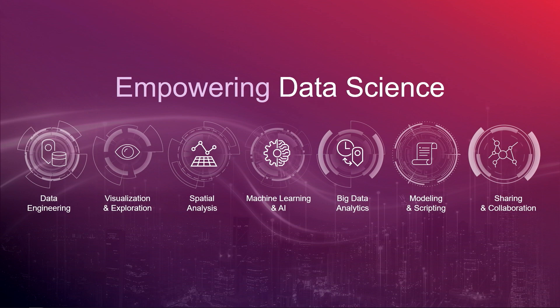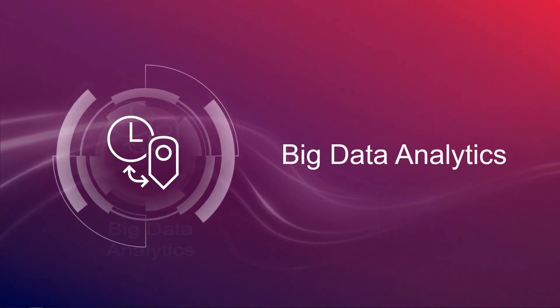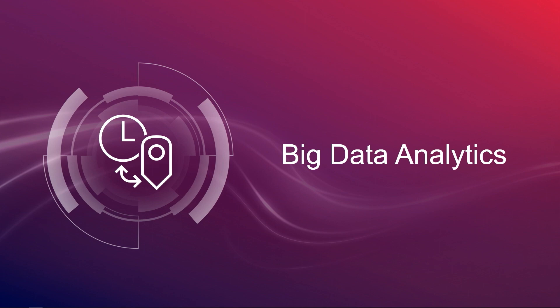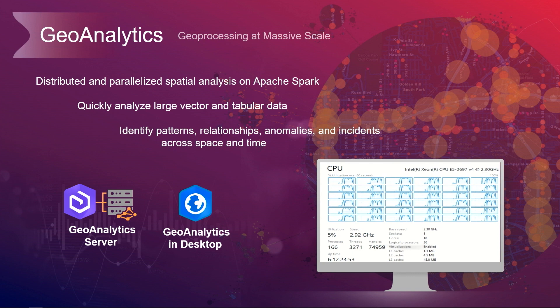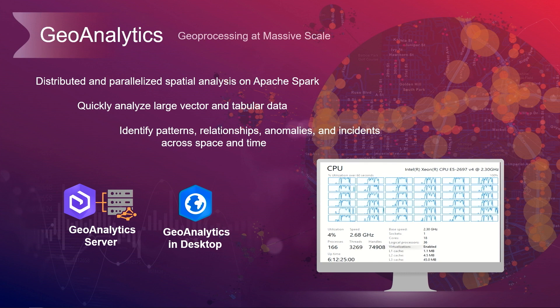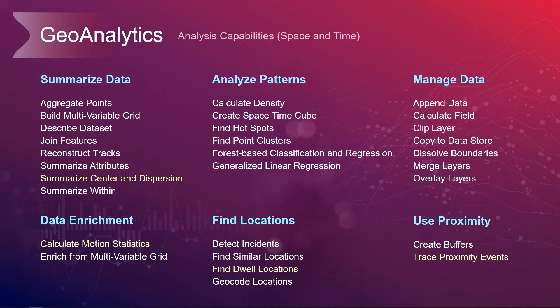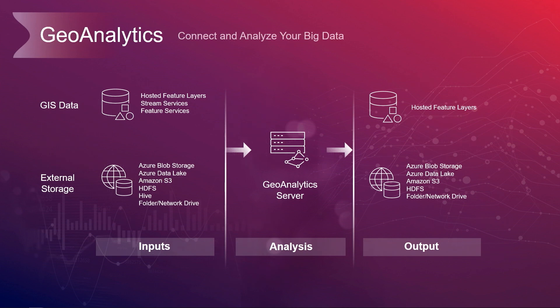Let's get started by looking into a couple of analytic engines available to you — this one for big data analytics. GeoAnalytics works on large vector and tabular data, often analyzing across time and space. It runs parallelized on the desktop using all available processing power to get your answers quicker, and on the server it can additionally redistribute analysis designed for bigger datasets and timely answers. Here you have a listing of all the analytic methods available, including recent additions like Trace Proximity Events and Find Dwell Locations. GeoAnalytics servers can sit alongside your data wherever it might be — after all, we're talking about big data.